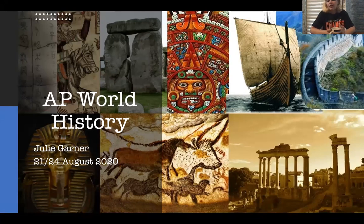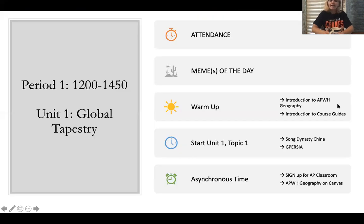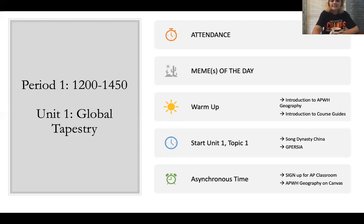Today should be August 21st, or if you're orange day, it will be August 24th. So let's begin. As usual, we are going to start with our agenda. Today we're changing things up because today we are starting Period One.